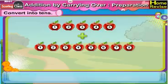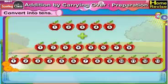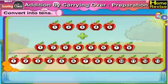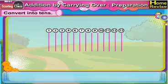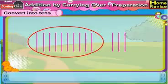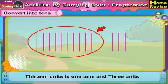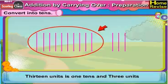Next, 5 units plus 8 units would be 13 units, and it is the same as 1 ten and 3 units. If you draw 13 straight lines, make a group of 10 straight lines and encircle it, three lines will remain. So it is 1 ten, 3 units.